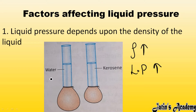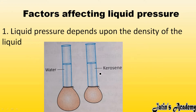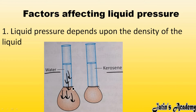Take the example of water and kerosene — water has more density compared to kerosene. In this activity, one container has water and another has kerosene, and at the bottom I am tying a balloon to both containers. Since water has more density, its particles exert more and more pressure, so this balloon will blow up more. Kerosene has less density, so it gives less pressure and the balloon blows up less.